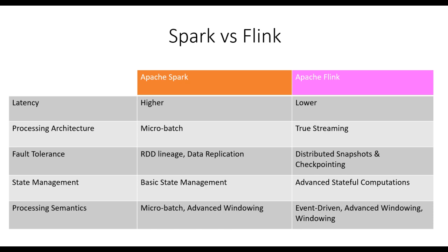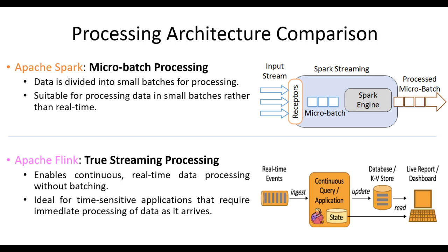Next, let's compare the processing architecture of Spark and Flink. Spark follows a micro-batch processing approach where data is divided into small batches for processing. On the other hand, Flink offers true stream processing, allowing for continuous real-time data processing without the need for batching. This makes Flink more suitable for time-sensitive applications that require immediate processing of data as it arrives.